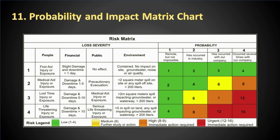The Probability and Impact Matrix uses the combination of probability and impact scores of individual risks and ranks or prioritizes them for easy handling. In other words, it helps determine which risks need detailed risk response plans. It is vital to understand the priority for each risk as it allows the project team to appreciate the relative importance of each risk.